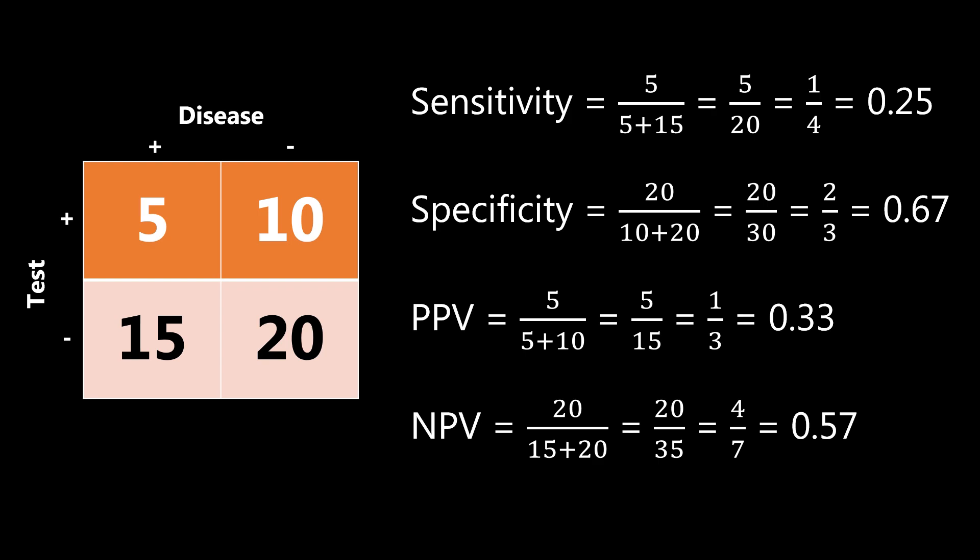Remember: if it's a highly sensitive test and it comes back negative, it's going to rule out the disease. If it's a highly specific test and it comes back positive, it's going to rule in the disease. Tests that are highly sensitive are good for screening — because if it's negative, those people can be ruled out on a screening exam. Tests that are highly specific are good for confirming diagnoses. A highly sensitive test: high sensitivity, negative, rule out. A highly specific test: SpIn, specificity, test positive, rules in.